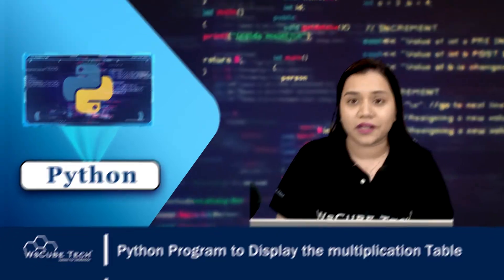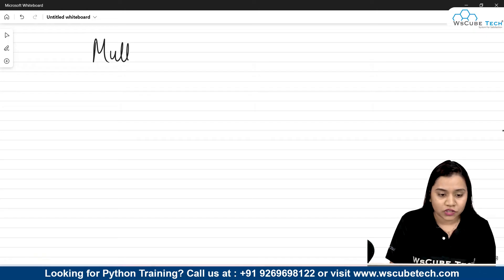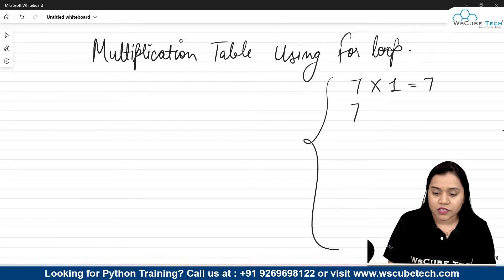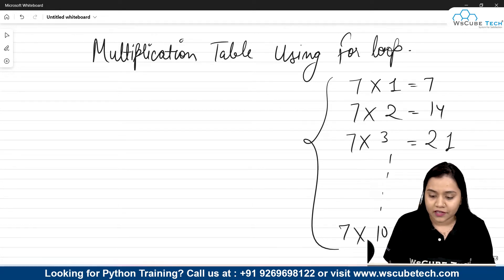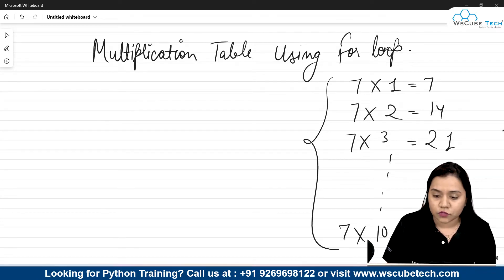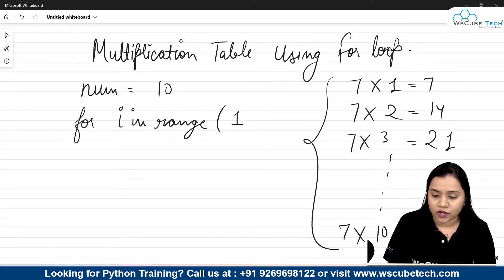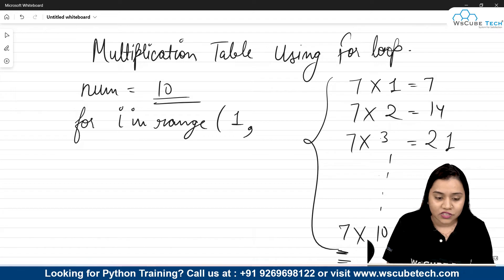Let's look at the multiplication table using a for loop. First, let's understand the logic. For example, seven multiplied by one equals seven, seven multiplied by two equals fourteen, seven multiplied by three equals twenty-one, and so on up to seven multiplied by ten equals seventy. We take a variable from the user — number equals input — and use a for loop: for i in range, starting from one, because we iterate one, two, three, four up to ten. This number remains constant while i covers the range.